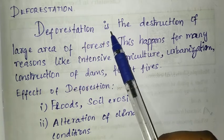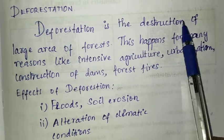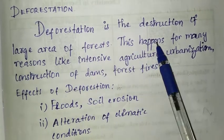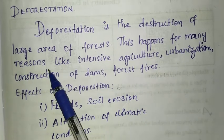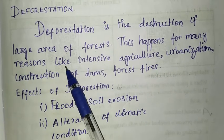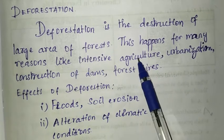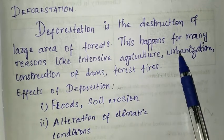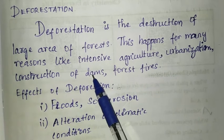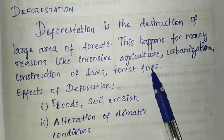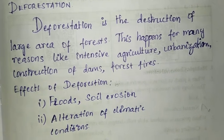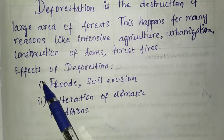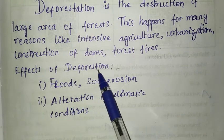Deforestation is the destruction of a large area of forest. This happens for many reasons like intensive agriculture, urbanization, construction of dams, and forest fires, etc. Effects of deforestation include soil erosion and alteration of climatic conditions.